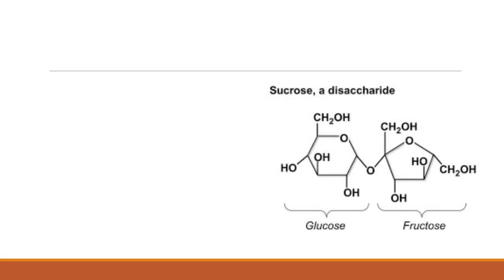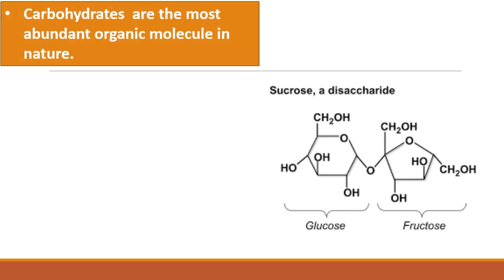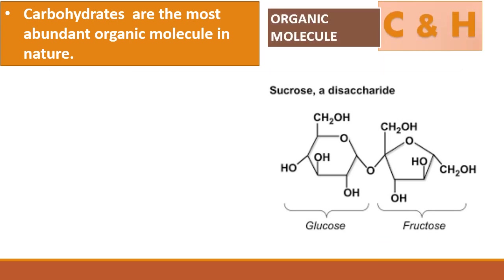Today we are going to study the formula of carbohydrates and the scientific definition of carbohydrates. First, carbohydrates are the most abundant organic molecules in nature. Organic molecules are compounds in which carbon and hydrogen atoms are present together, so we call them organic molecules.